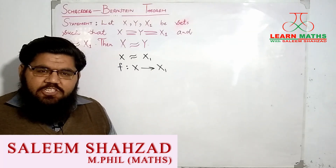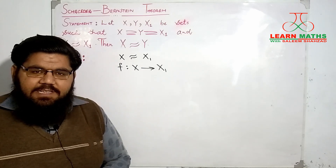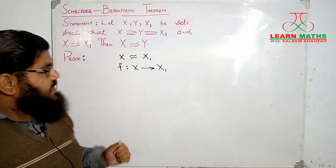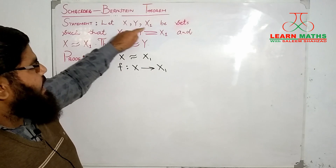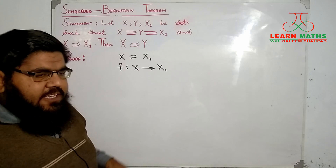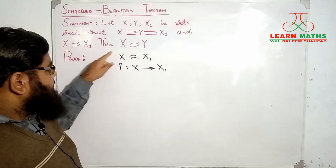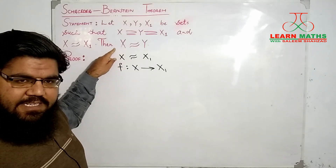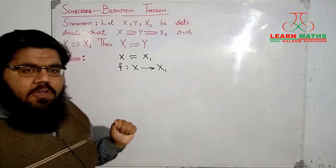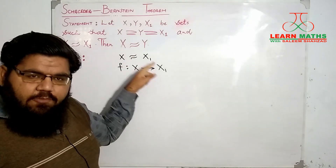Assalamu alaikum dear students, welcome back to my channel. In today's lecture we are going to prove a famous result from set theory known as the Schröder-Bernstein theorem. It says that if you have three sets X, Y, X₁ such that X is a superset of Y, Y is a superset of X₁, and the cardinalities of X and X₁ are the same, then we have to prove that the cardinalities of X and Y are the same as well. I start my proof with the assumption that X and X₁ are equipotent to each other.